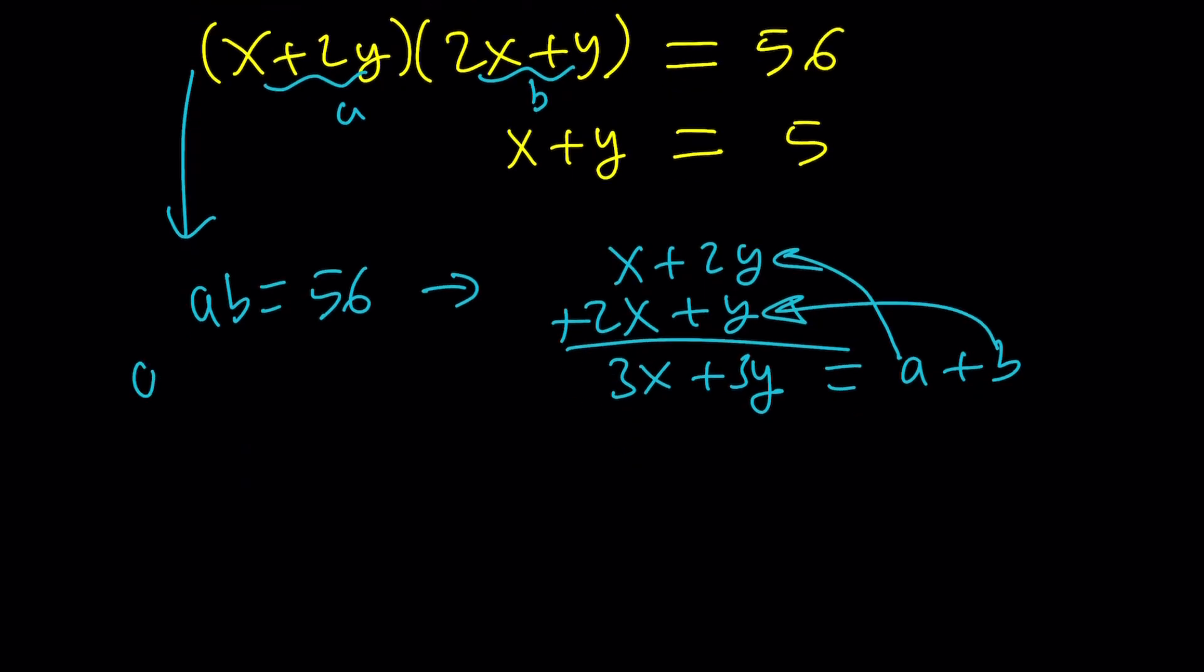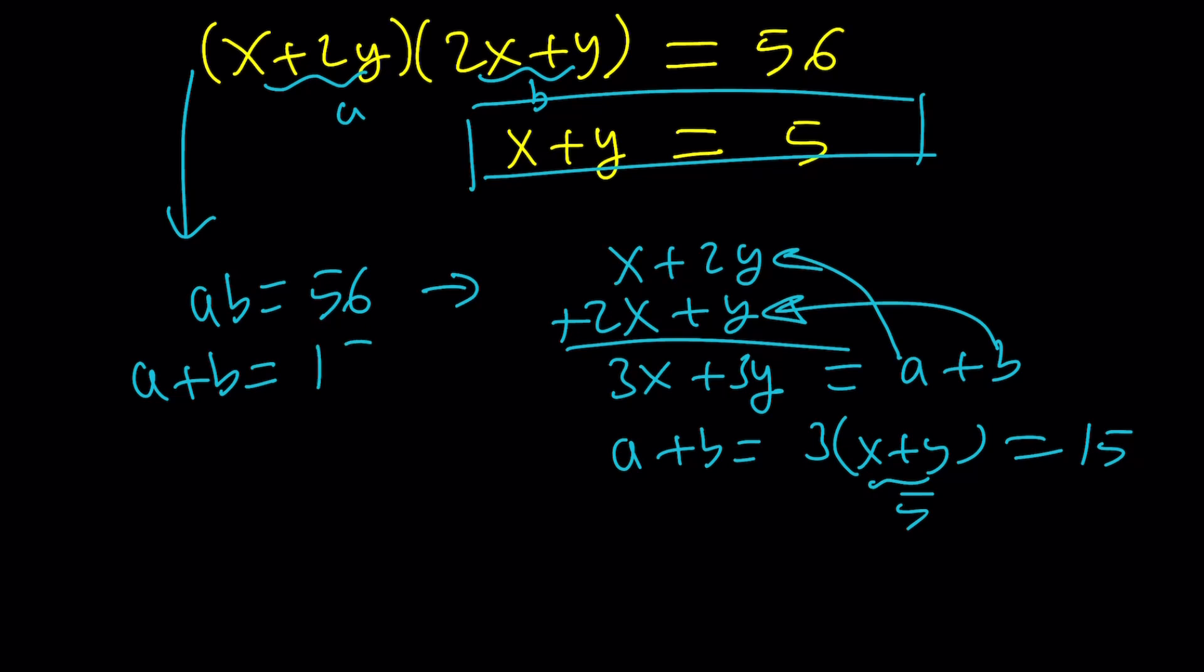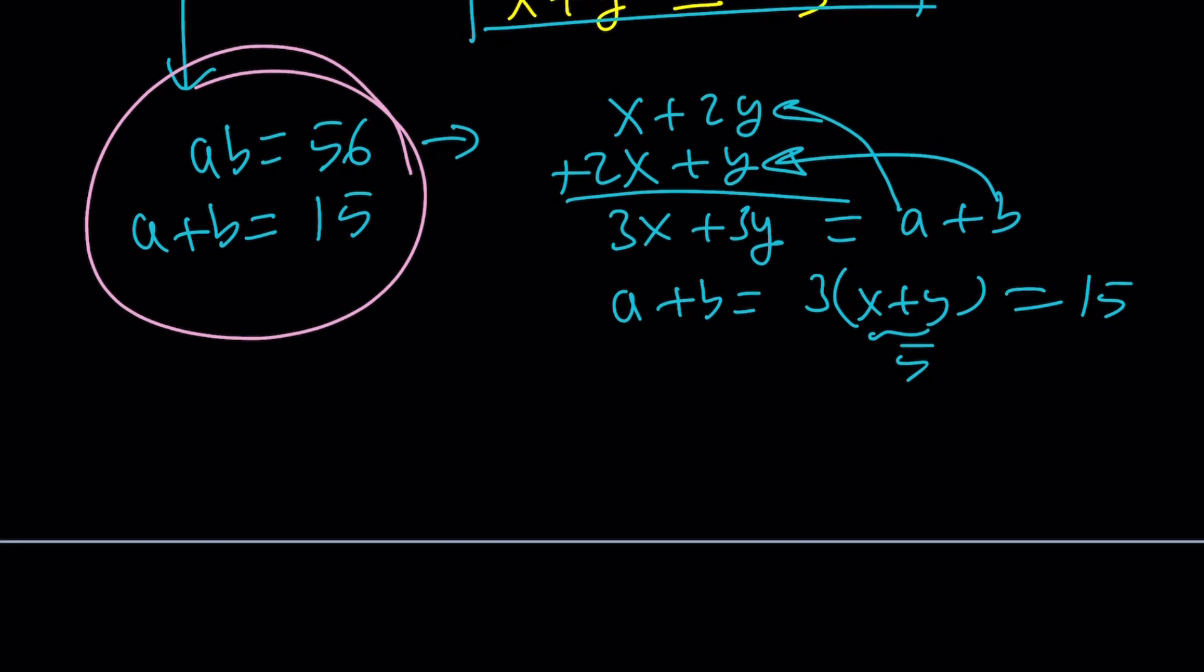So a + b is 3x + 3y. We now got a different system. But we know that x + y is equal to 5. So a + b is going to be 3 times (x + y). Since x + y is 5, we're going to get a + b equals 15. And now you have a really nice system.